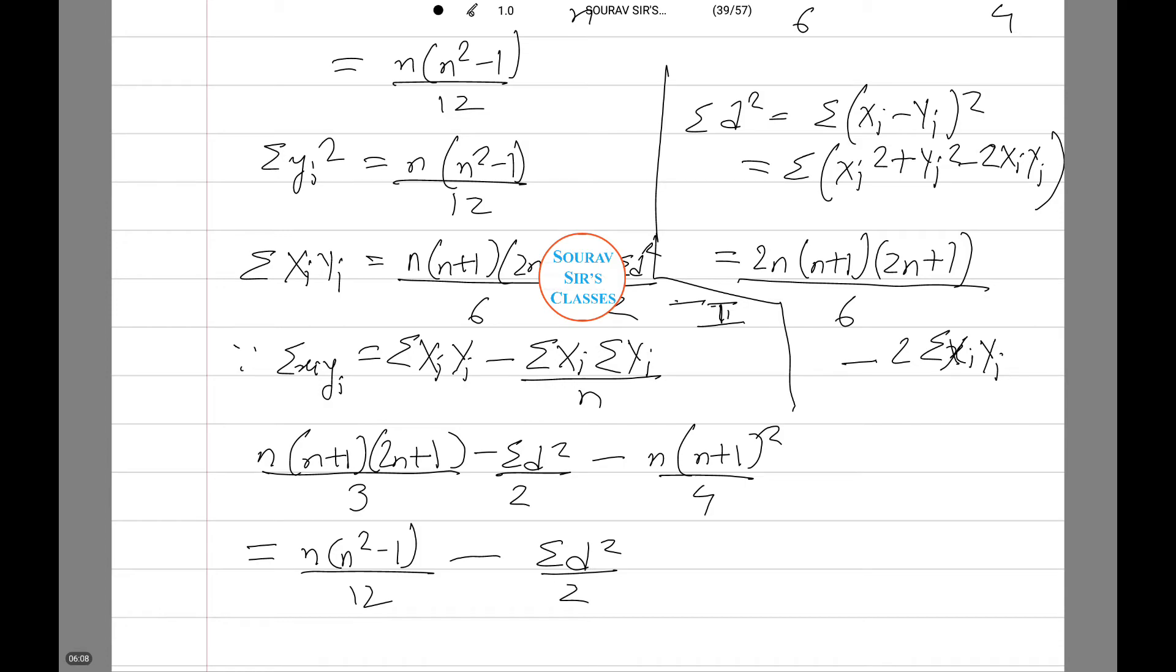Now substituting the preceding equations number 1 and number 2, that is our equation for r which equals summation small xi small yi by root summation xi square summation yi square, and you will get the answer.